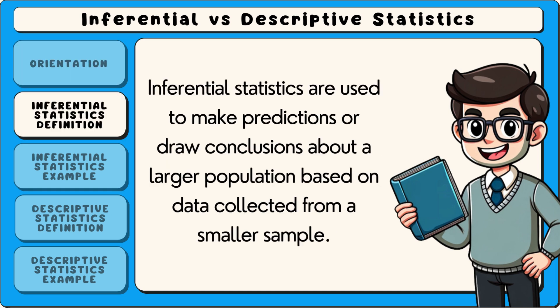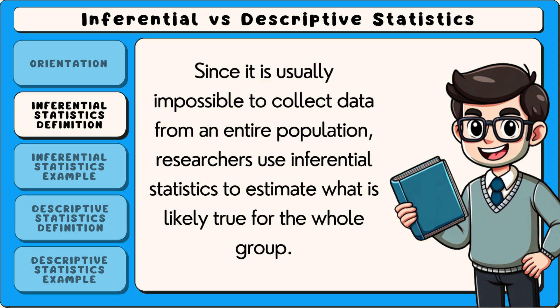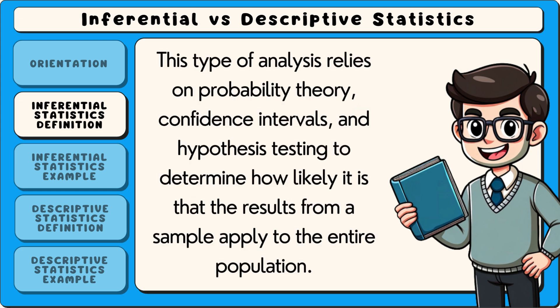Inferential statistics are used to make predictions or draw conclusions about a larger population based on data collected from a smaller sample. Since it is usually impossible to collect data from an entire population, researchers use inferential statistics to estimate what is likely true for the whole group. This type of analysis relies on probability theory, confidence intervals and hypothesis testing to determine how likely it is that the results from a sample apply to the entire population.